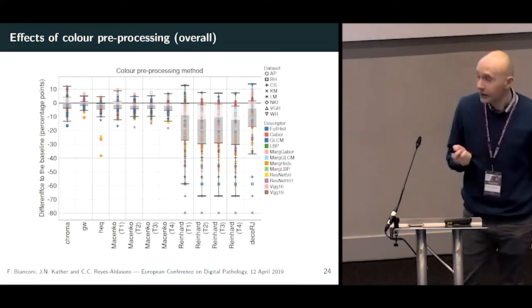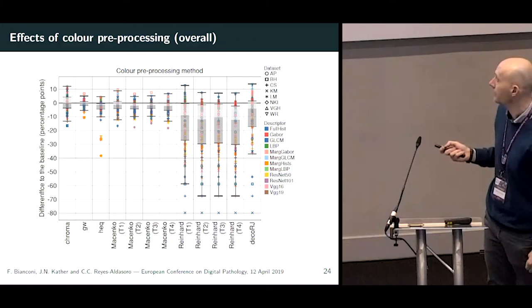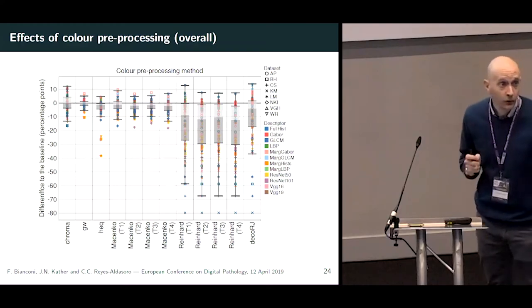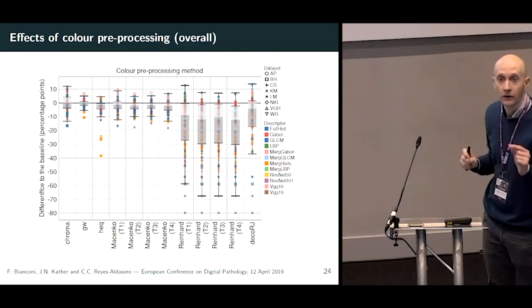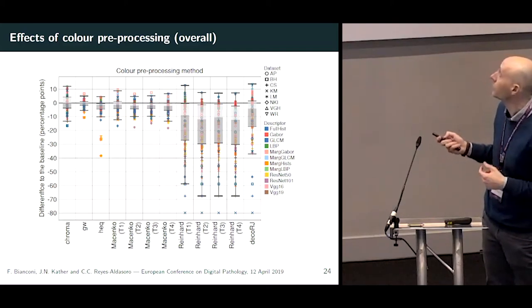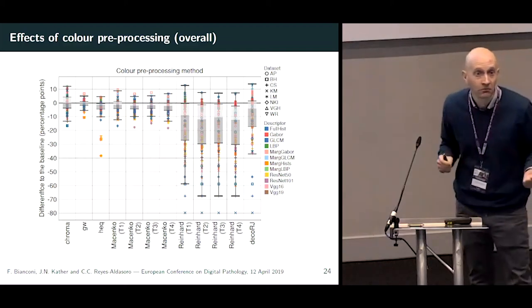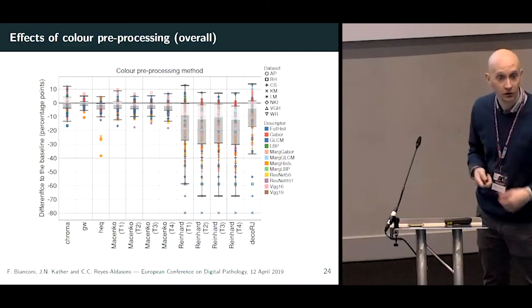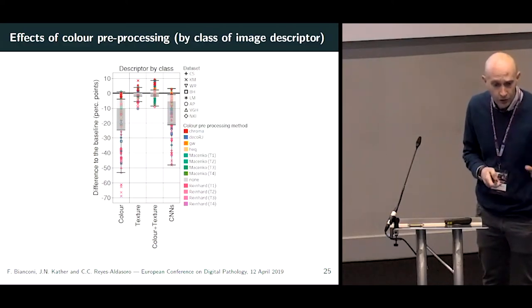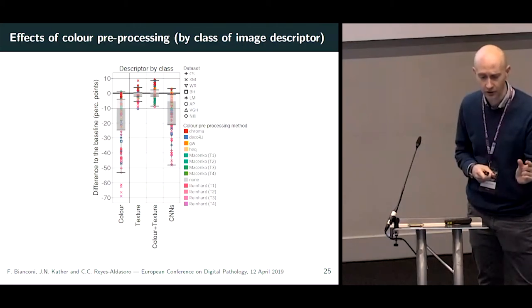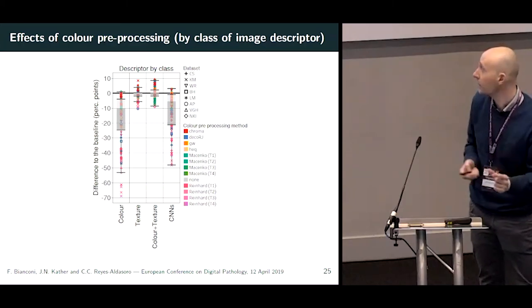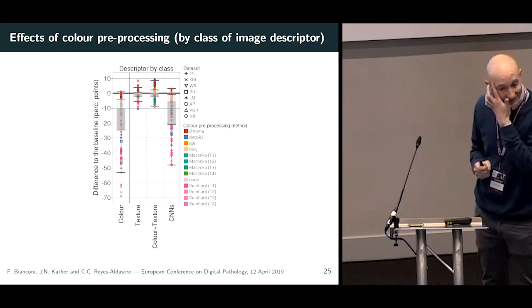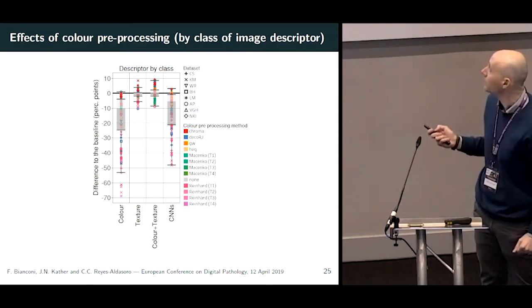This plot represents the difference to the baseline for each color pre-processing method. It is interesting to see that in the case of color transfer, there isn't any significant difference between the target images used — even using a non-histology image doesn't change the results much, which is quite significant. If we group results by class of image descriptor, we can see that the descriptors most affected by color pre-processing are those based on color — which makes sense — and those based on convolutional networks.